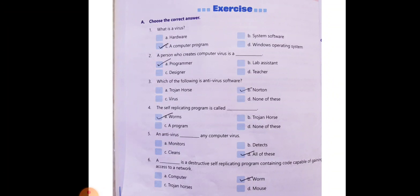So answer is option D, all of these. Now part 6, dash is a destructive self-replicating program containing code capable of gaining access to a network. Answer is option B. Worms are our self-replicating programs which are capable of containing code gaining access to a network.